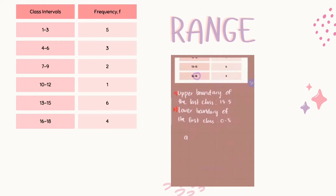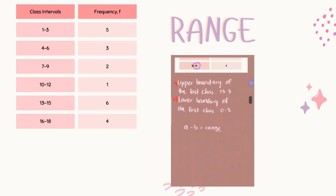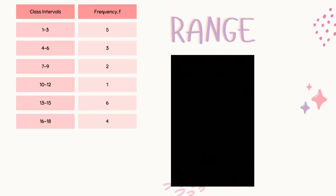To find range, we use A minus B equals range. So 18.5 minus 0.5, we will get 18. So we can conclude that our range is 18.